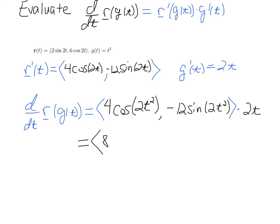We'll have 8t cosine of 2t squared, comma, minus 24t sine 2t squared. And that is our solution.